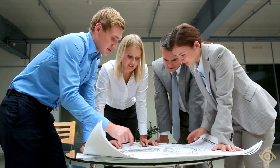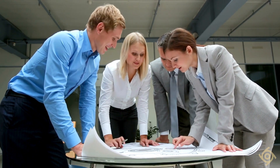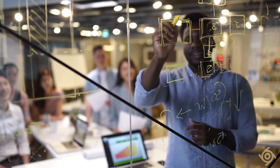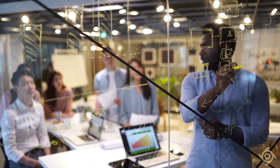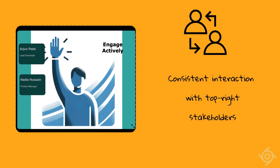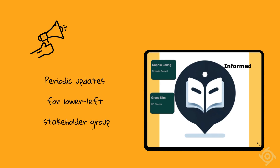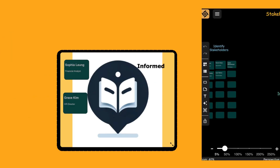Depending on the nature of the project and your organizational context, you may then determine how to place your identified stakeholders into these classifications and how to engage and communicate with each group. For example, you might want to engage actively with the stakeholders in the right top quadrant daily, while you might just communicate occasionally with the stakeholder group in the left bottom to just keep them informed.